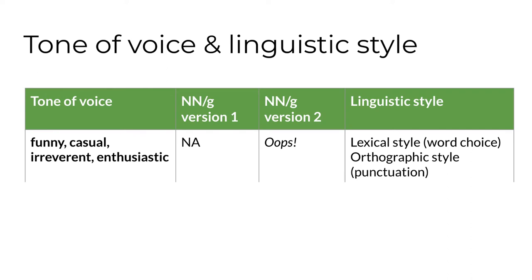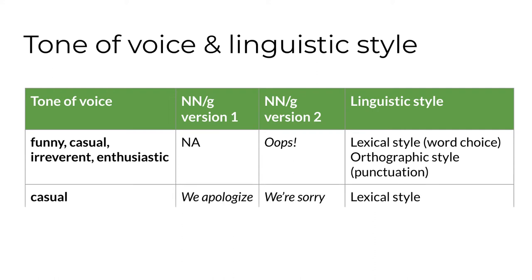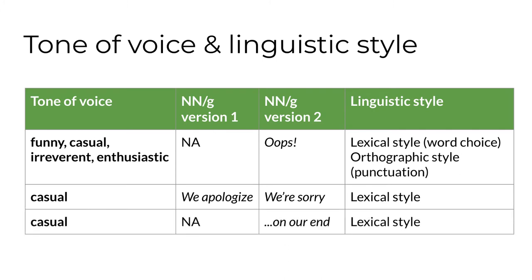Let's dig a little deeper to understand how linguistic style — language variation — was used to manipulate tone of voice in those examples. To make version two of the message funny, casual, irreverent, and enthusiastic, the word oops and an exclamation point were added at the beginning. Words are called lexemes or morphemes in linguistics, so we could describe the difference between the two messages as one of lexical style. The change in punctuation is orthographic — how language is coded in writing. There are two other differences that create the more casual tone: sorry is more casual lexical style than we apologize, and the addition of on our end is also a more casual lexical style. Several lexical style choices together make version two more casual, funny, irreverent, and enthusiastic than version one.